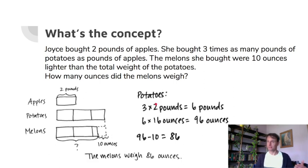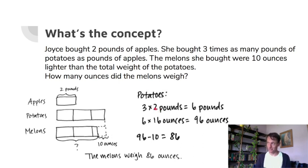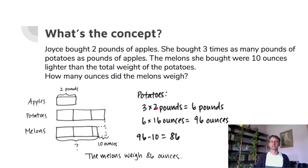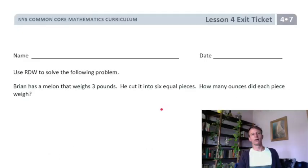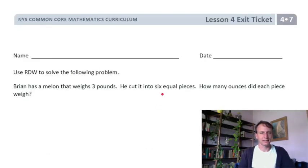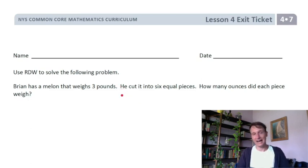Is that your final answer? That's my final answer — I don't need to call a friend. The melons weigh 86 ounces. And look at that — the exit ticket also has more melons. Somebody was really feeling melons that day.